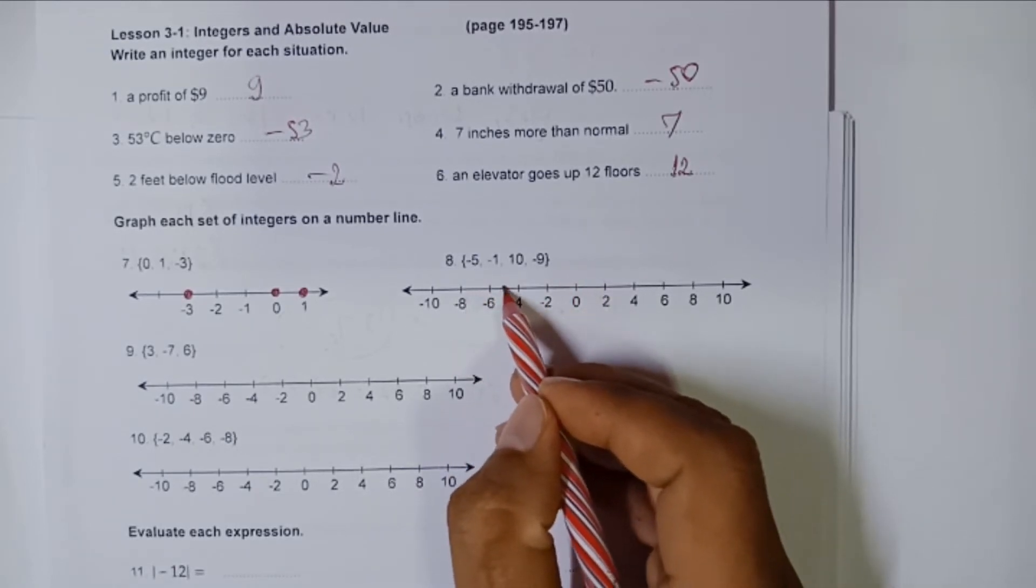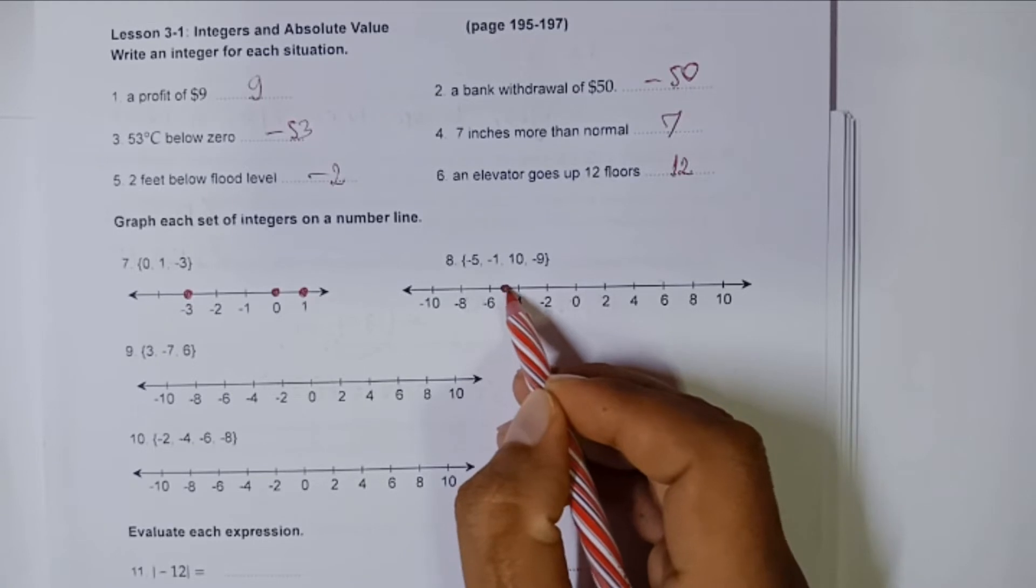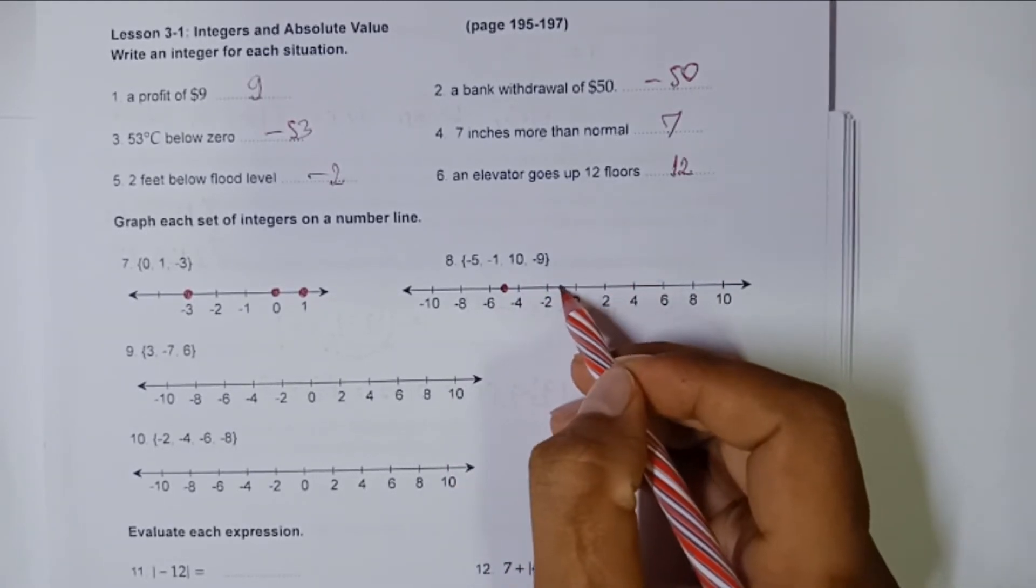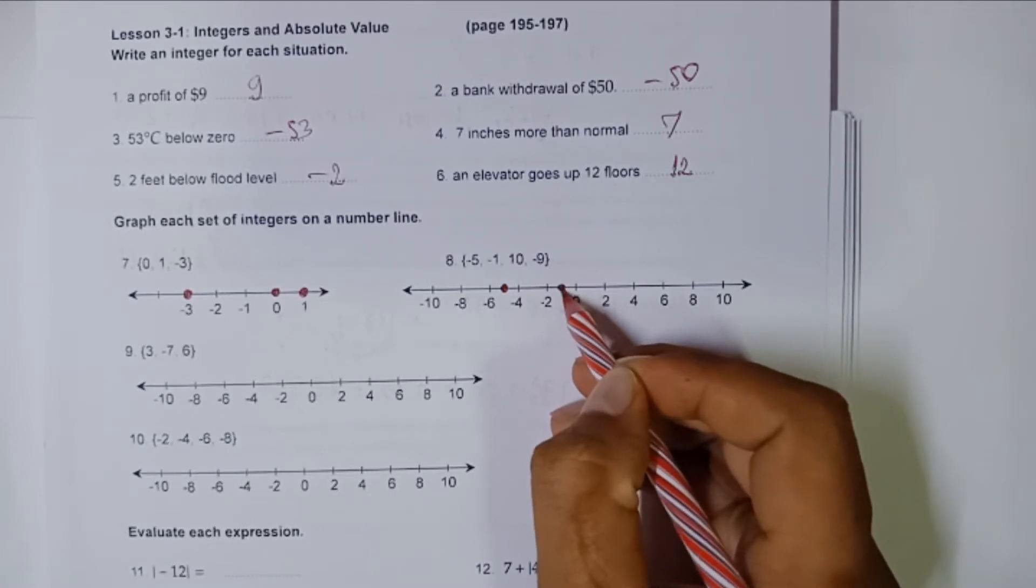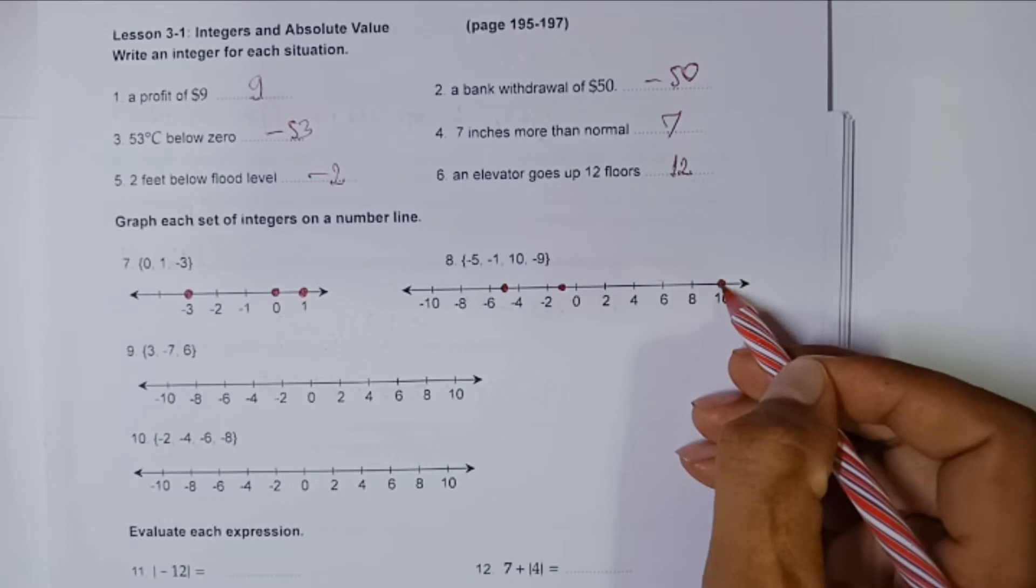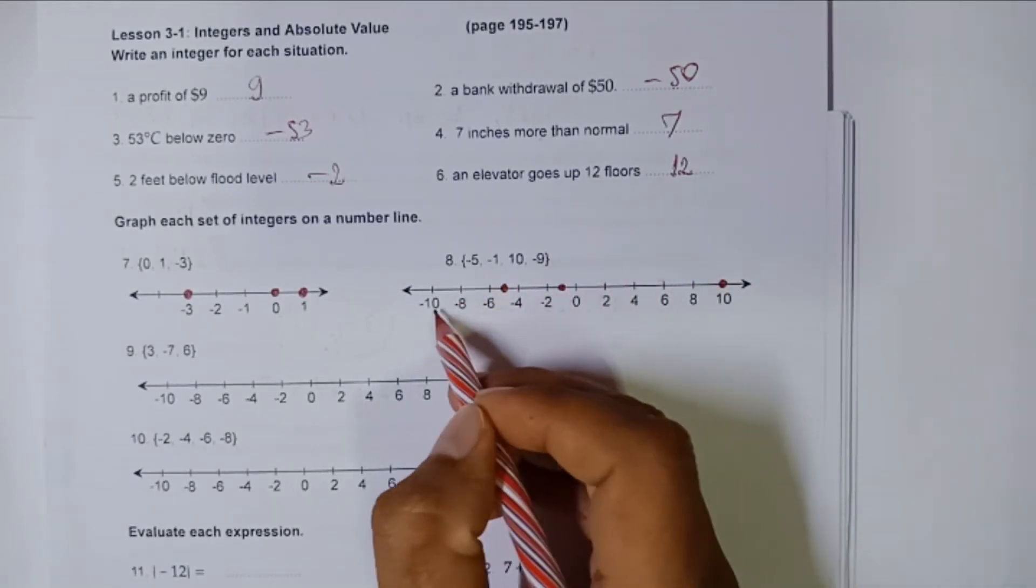Negative four, negative five in the middle between four and negative four, and six. And then negative one in between negative two and zero, so negative one. And then ten, this is ten. Then negative nine in between negative ten and negative eight, that's negative nine.